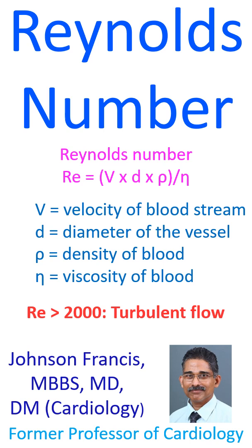That is why anemia amplifies most murmurs, while polycythemia decreases the murmurs.